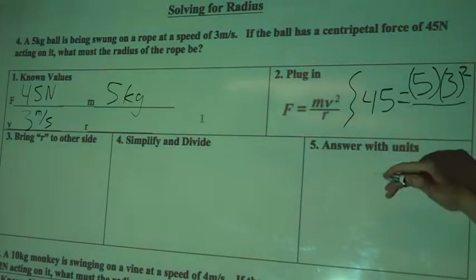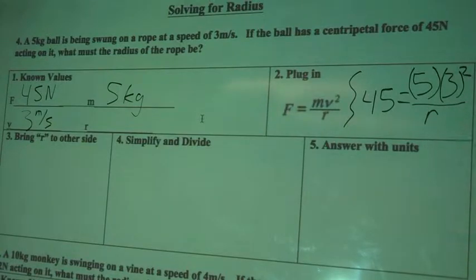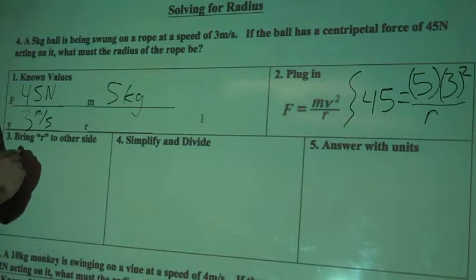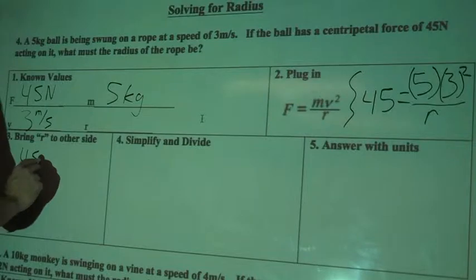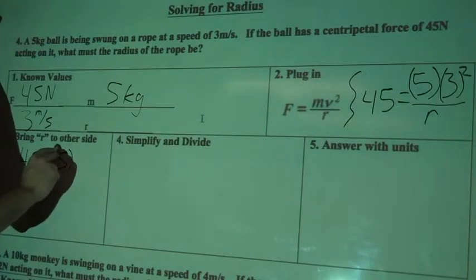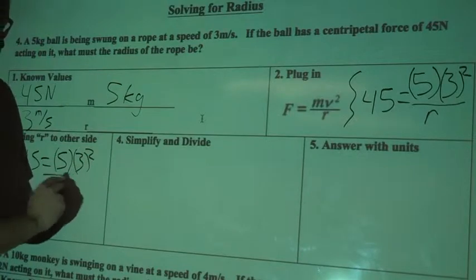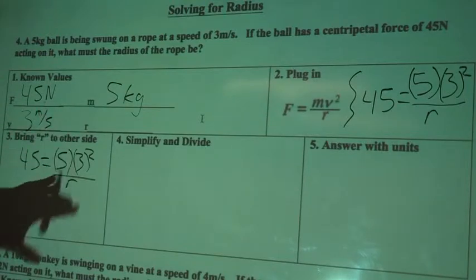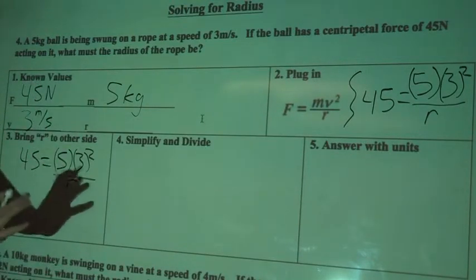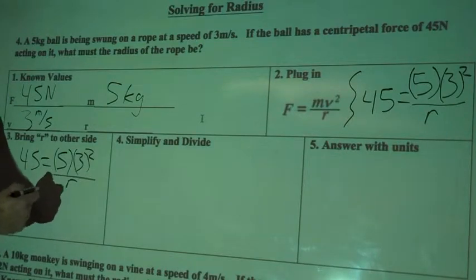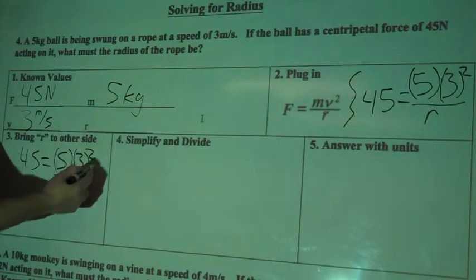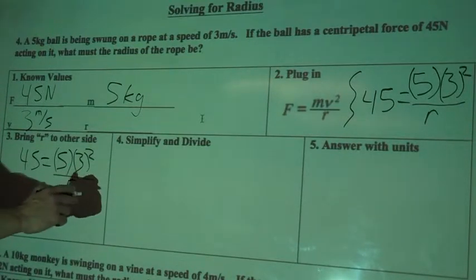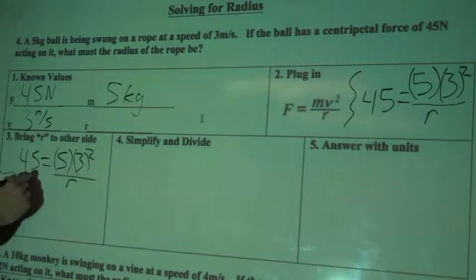And then my radius I don't know, so I'm just going to write R down there. So let's bring R to the other side. We've got 45 equals 5 times 3 squared divided by R. And I want to bring R to the other side, we've done this before. It's just a bit of algebra. If I want to get something from the denominator up to the numerator, one of the things I can do is I can multiply R on both sides. And I'm going to do this out on this first problem here just to show you what I mean.